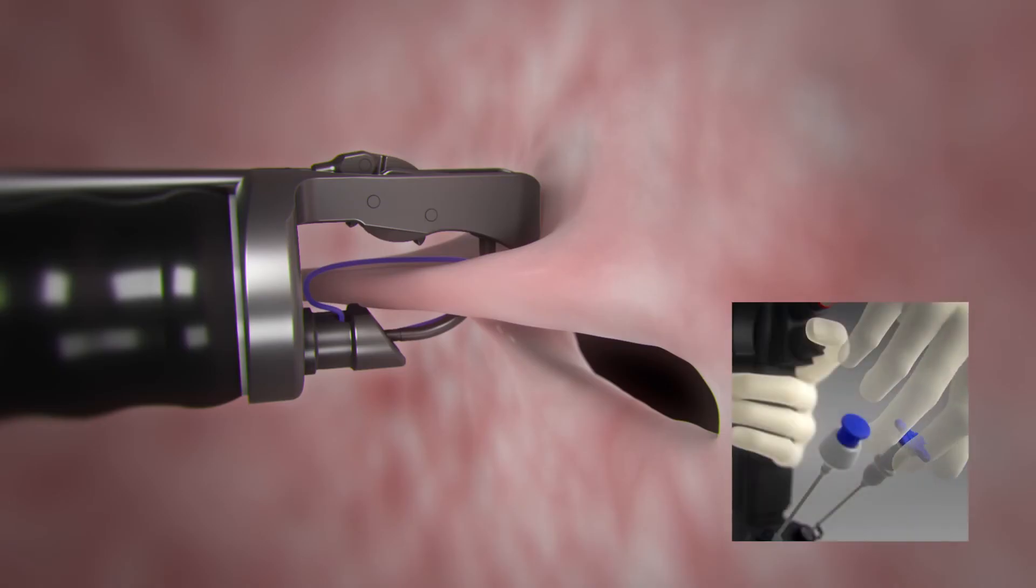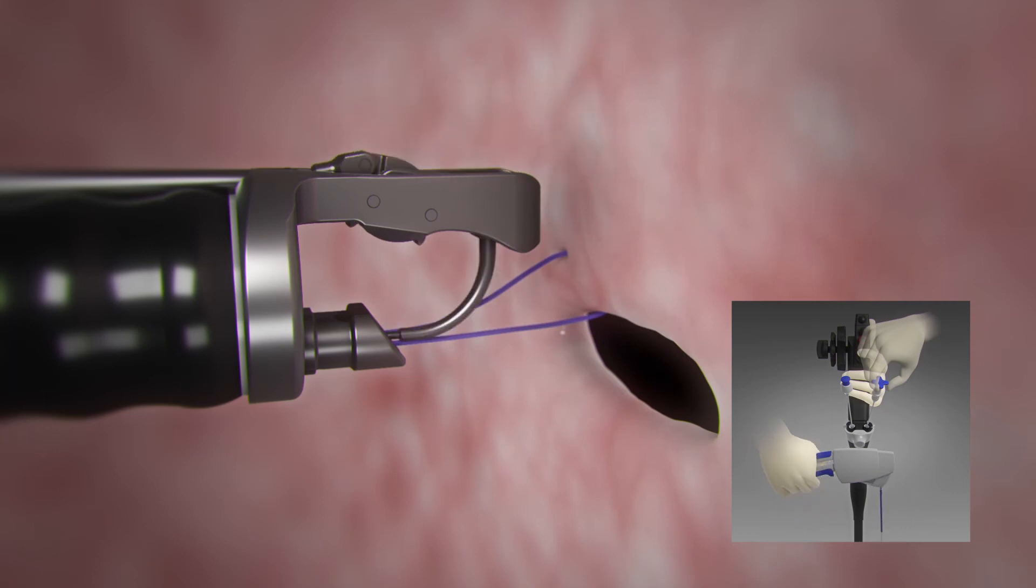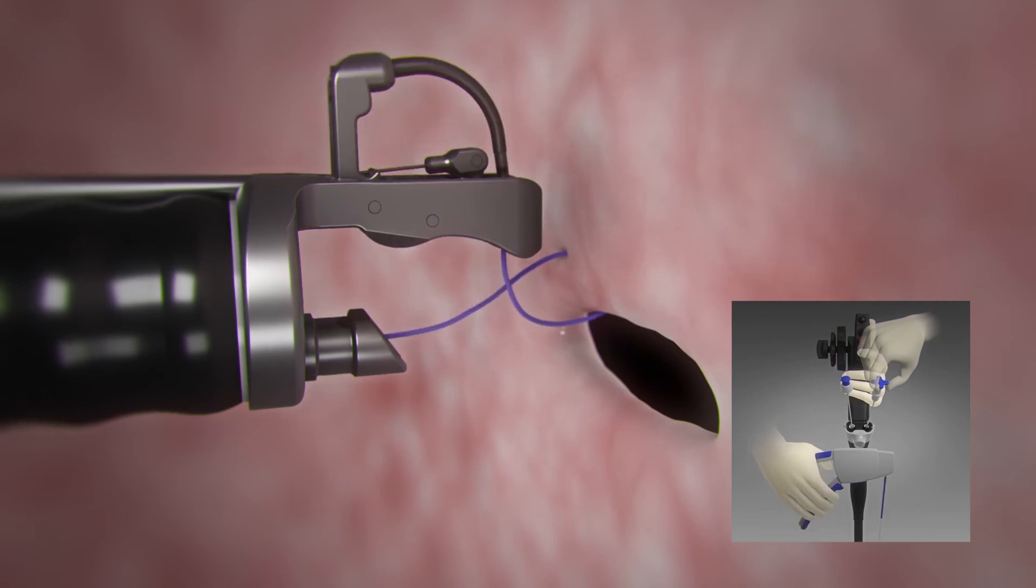Turn the tissue helix counterclockwise to release from the tissue and pull the blue knob to retract helix. Finally, open the needle driver handle. Repeat steps for additional full thickness suture placement.